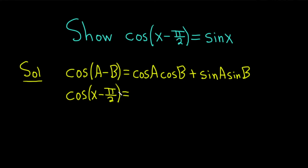That's equal to, so a is x and b is pi over 2. So this is going to be the cosine of x cosine of pi over 2, because b is pi over 2.